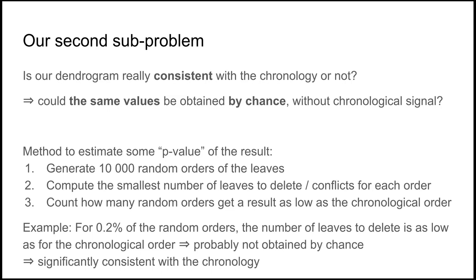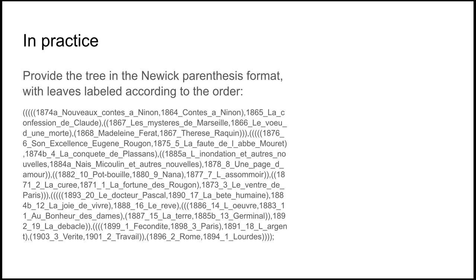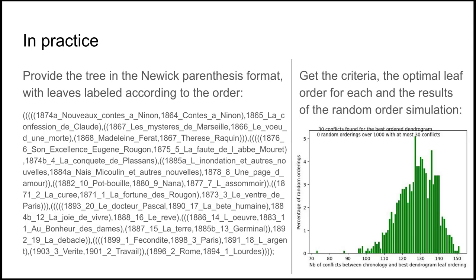So to provide the trees as input, we have to code it in the Newick Parenthesis format. And you can get this simulation with 1,000 simulated random orderings. In this case, you see that there are only 30 conflicts for Zola. So it's much less than the best random order that we found. So it's very likely that there is a chronological signal and it's not due by chance.